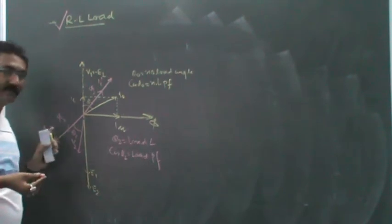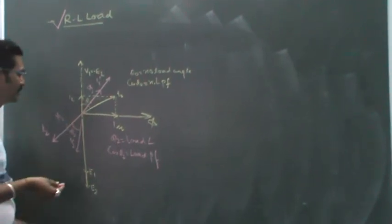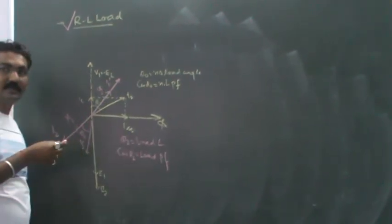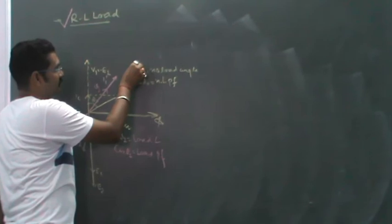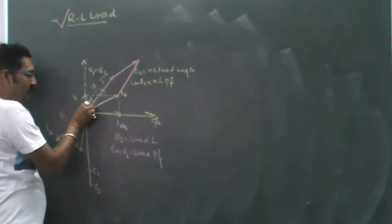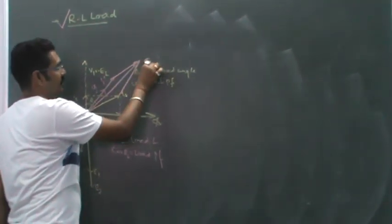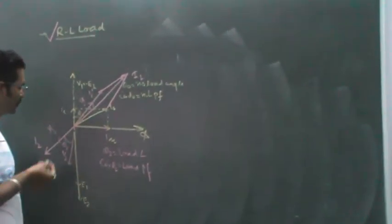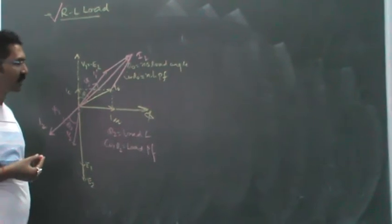The net secondary current is I2. The net primary current will be I_naught plus I1'. These two current components of the primary circuit can be added together to find the resultant primary current using the parallelogram law. This will be the resultant primary current.